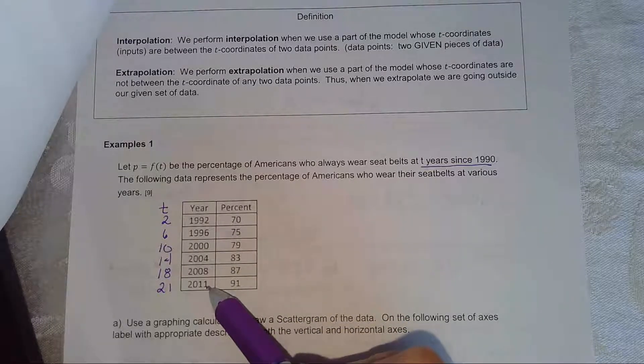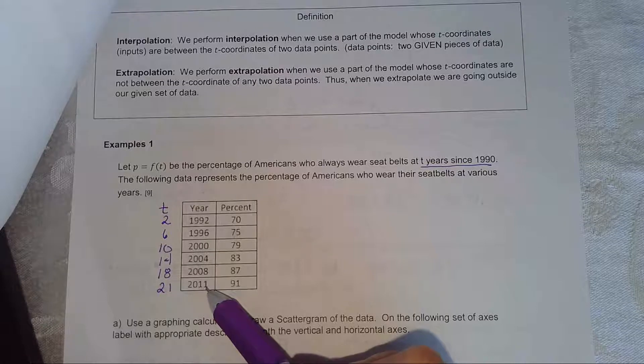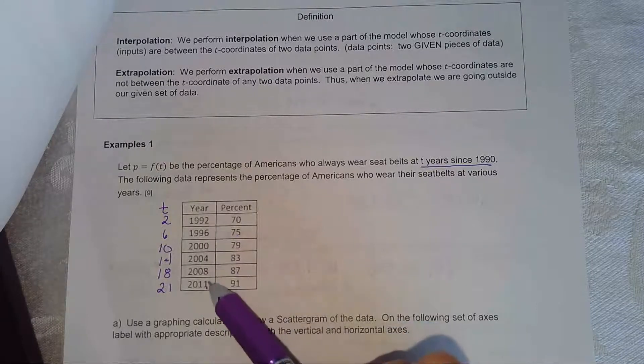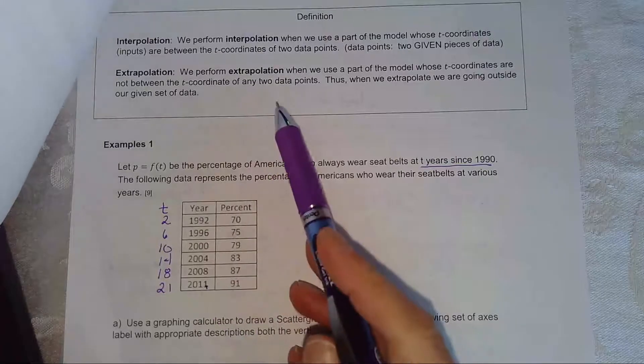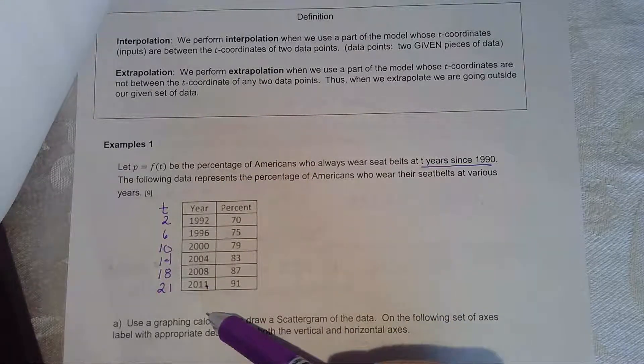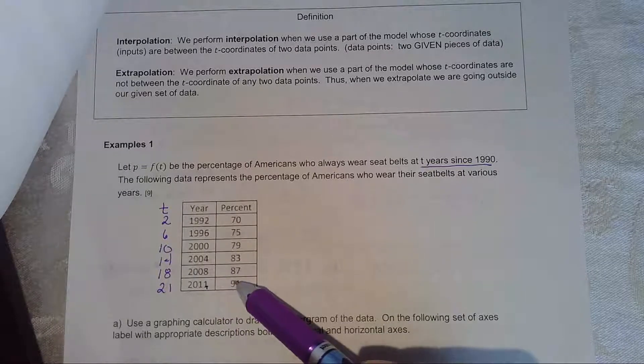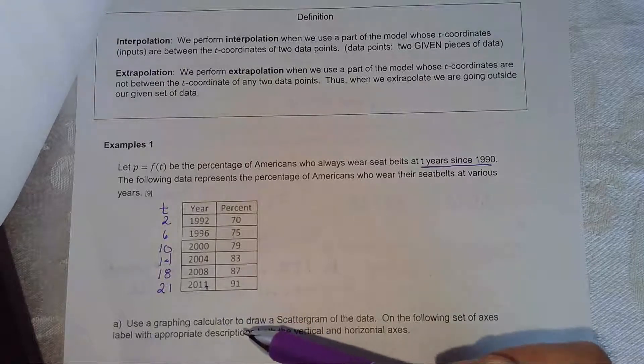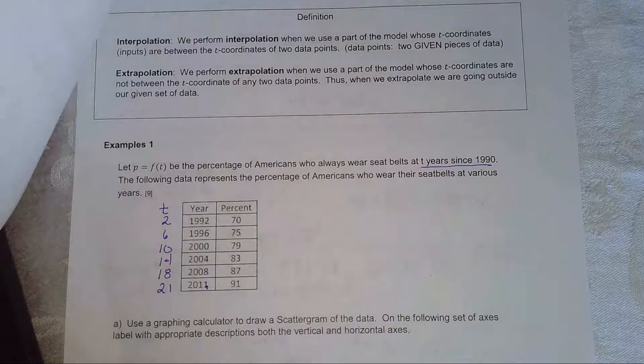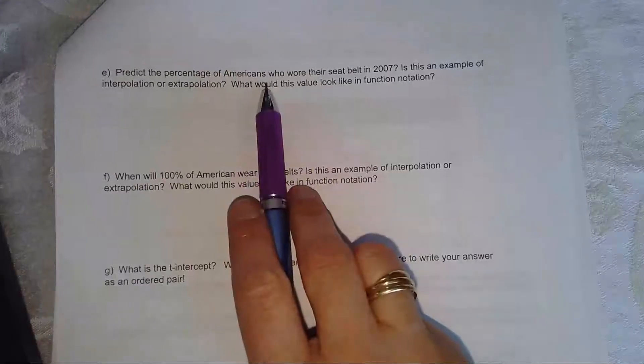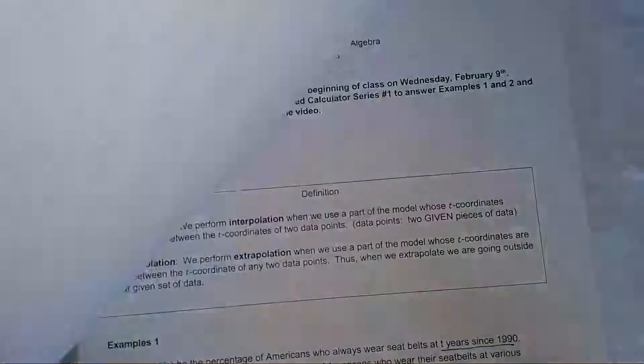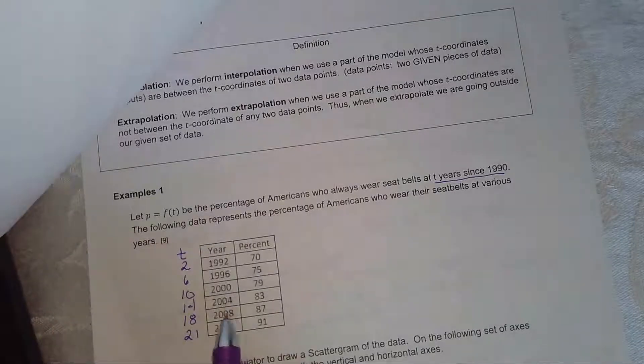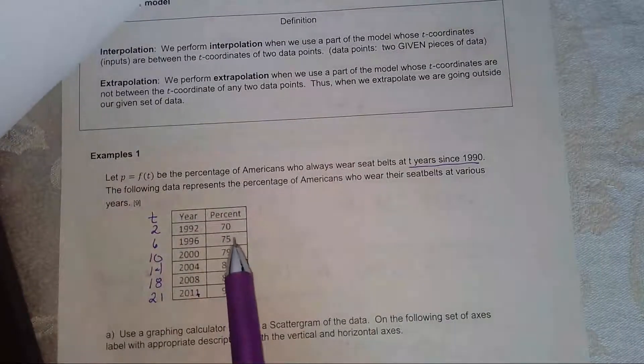Anything beyond those years would be extrapolation. Anything within those years is interpolation. When you interpolate, your data can be somewhat reliable. The strength of your model will give you the strength of the reliability. Extrapolation means you're going outside of your set of given data. And sometimes when you go outside of your given set of data, the data is not as reliable.